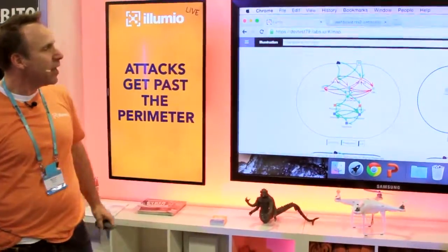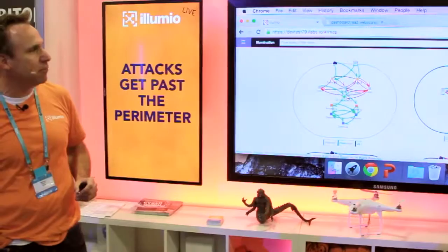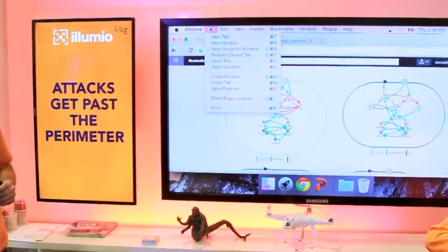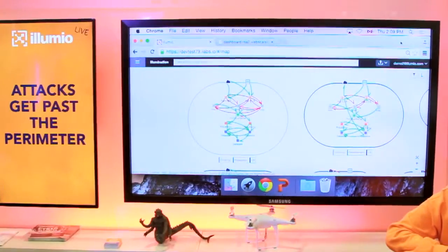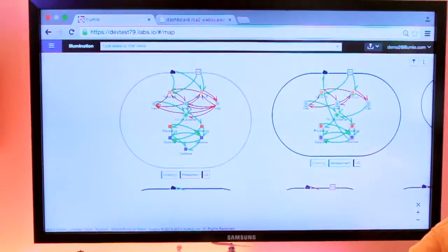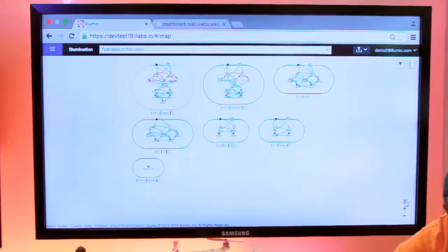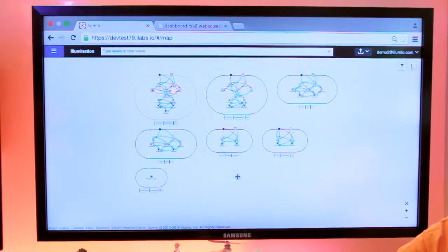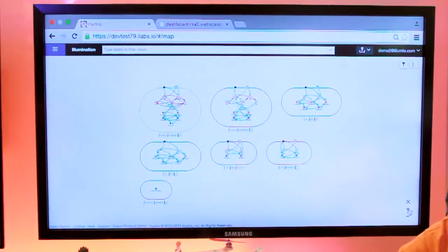What you see on the screen right now is actually what we call illumination mode. And in illumination, what we actually do is we show you what's going on behind your firewall. So attacks get behind your perimeter. And when things get behind that perimeter firewall where you spent 90% of your traffic and you missed a bunch of stuff, what do you do? You don't have any idea of what's going on.